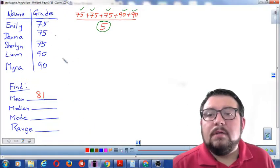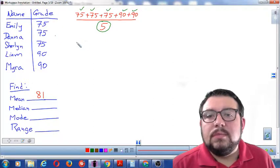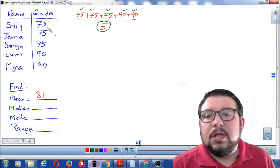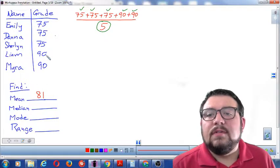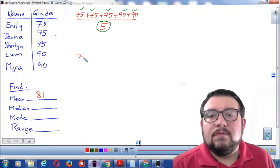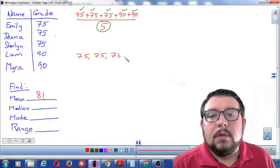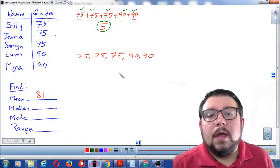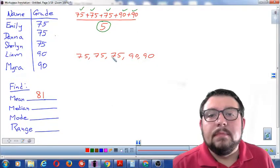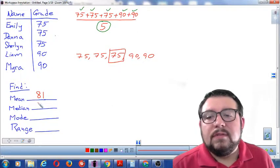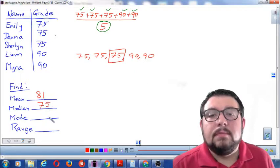Alright, so let's keep going. We're going to find the median. For the median, what you do is put the numbers from least to greatest, which they already are, so that's very convenient. 75, 75, 75, 90, 90. So we start from smallest to largest. We grab the median means middle. So, we're going to grab the middle number, which is 75. That is our median.